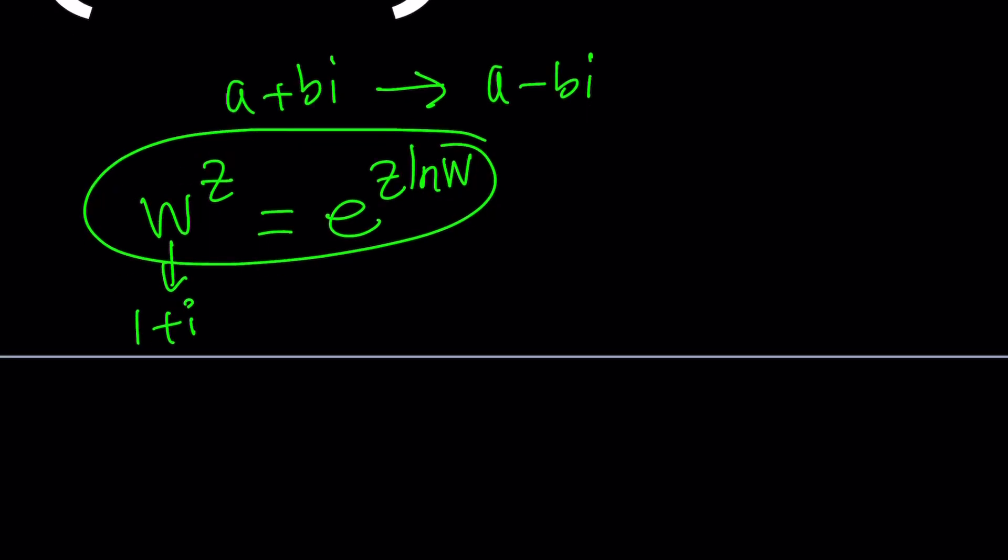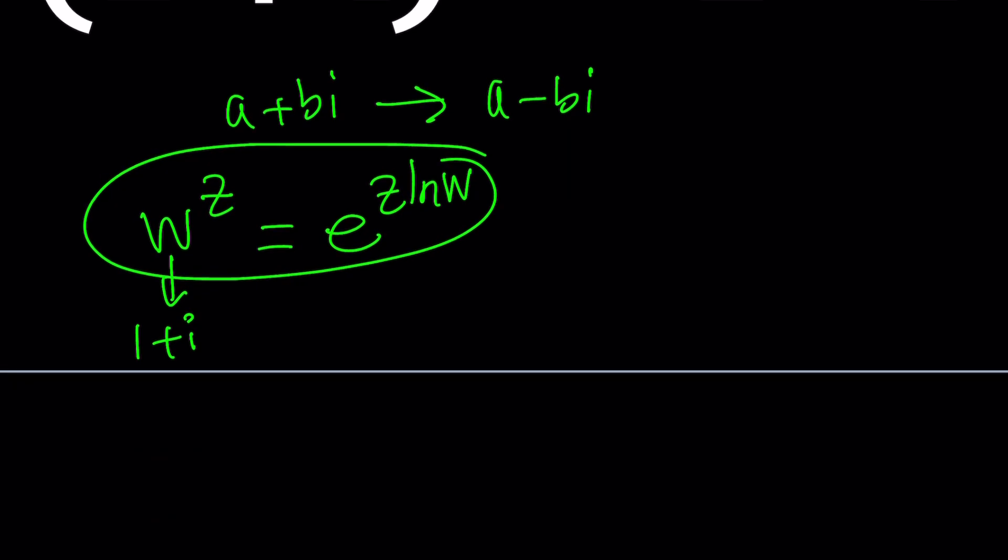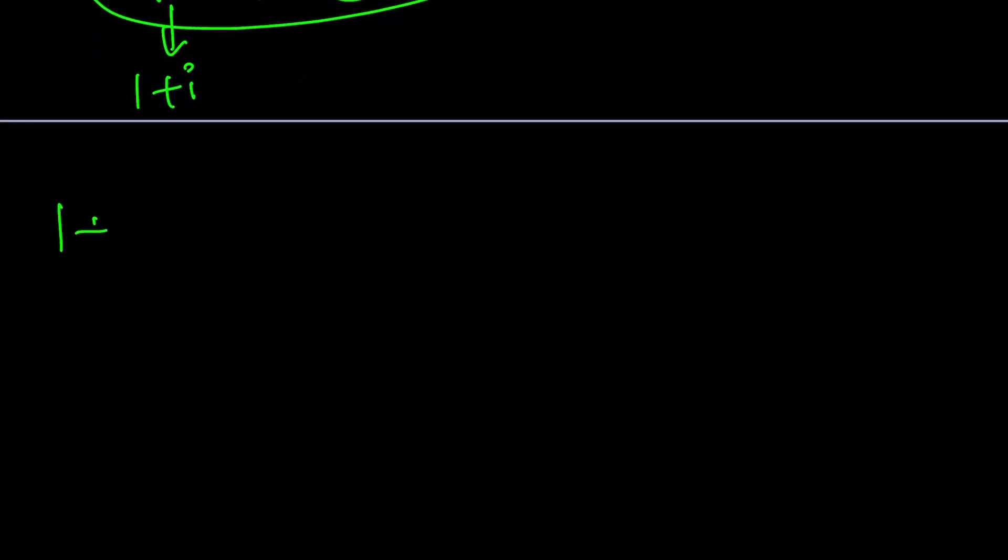Anyways, let's go ahead and apply the definition. Luckily, we have a definition. So 1 plus I to the power Z can be written as E to the power, thanks to Euler, we have something called Euler's number, and it's just amazing. It's Euler-mazing. Okay, anyways, I just made it up. So we can write this as E to the power Z LN 1 plus I. We have Z LN 1 plus I. Okay.